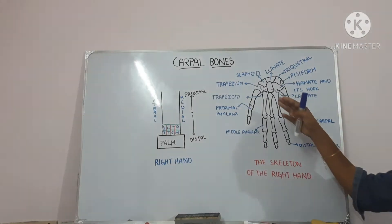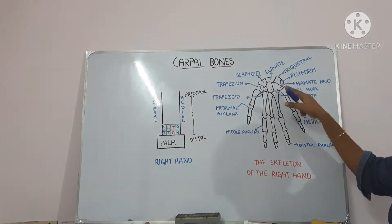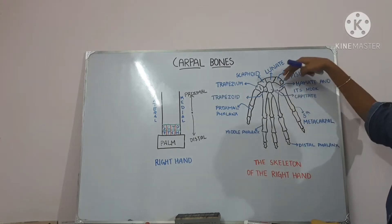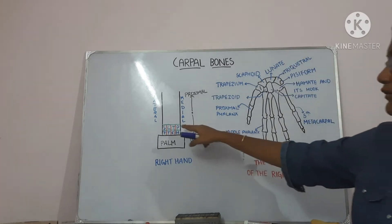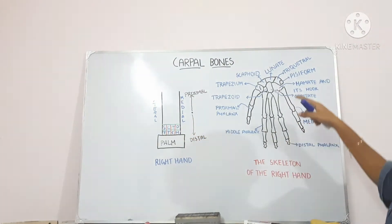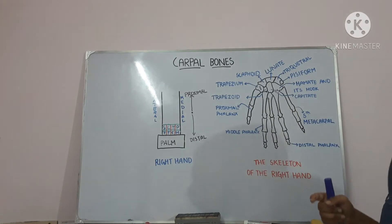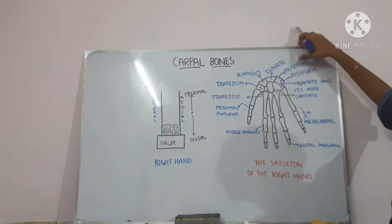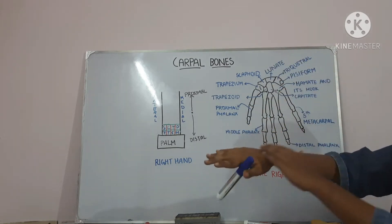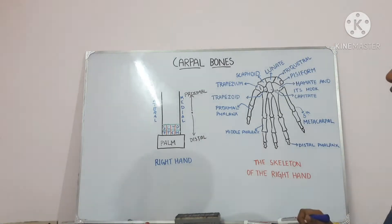On the palmar surface, on its distal end, it has an oval facet. The pisiform bone, which is pea-shaped, is present over here and on its dorsal surface on its proximal end it has an oval facet. The dorsal part means this part and the proximal part means over this place, so on the proximal end it has an oval facet.